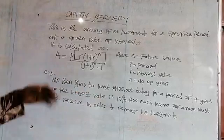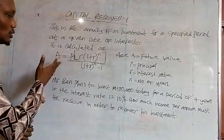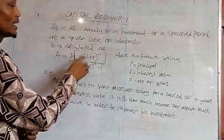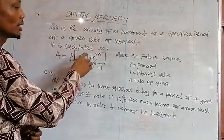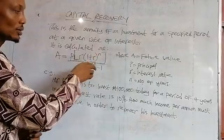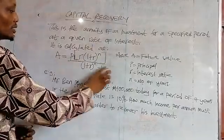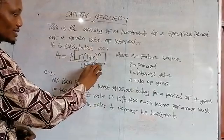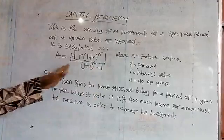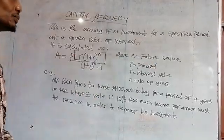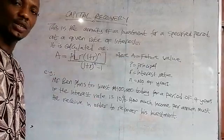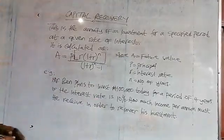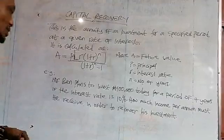To calculate and determine that, there is a formula: A = P × [r(1 + r)^n] / [(1 + r)^n − 1]. Where A is the annuity value, P is the principal, r is the interest rate, and n is the number of years of investment.